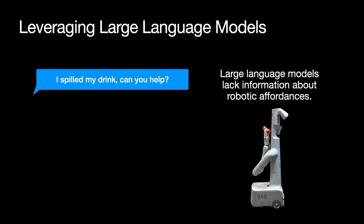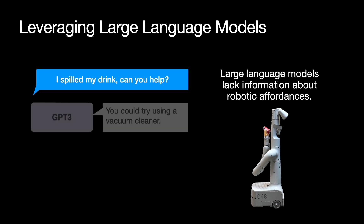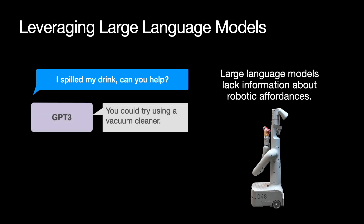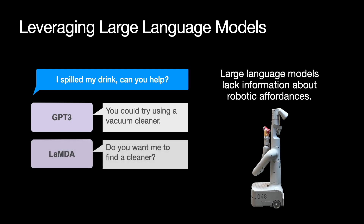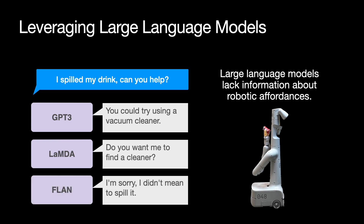Large language models may hold the key to unlocking such tasks. However, out of the box, they're not very useful. GPT-3 offers to vacuum the spill, Lambda to call a cleaner, and Flann apologizes. This is because none are grounded in their reality, or the robot's capabilities.